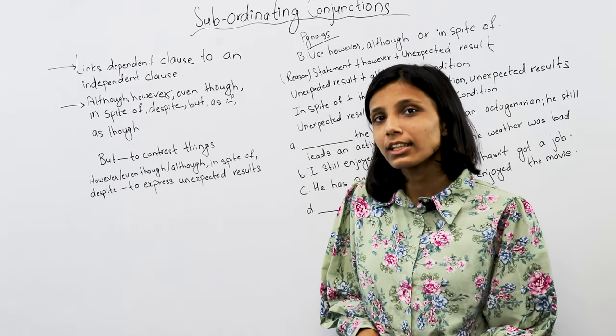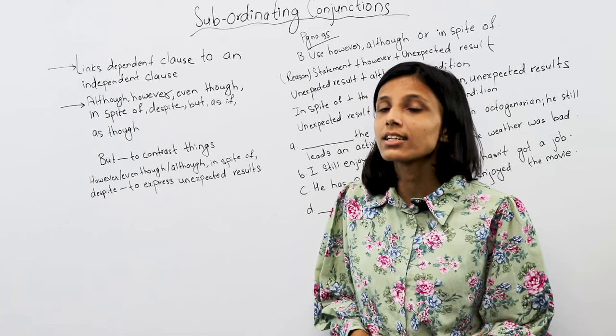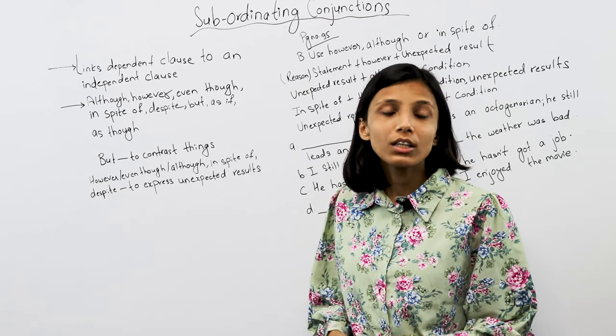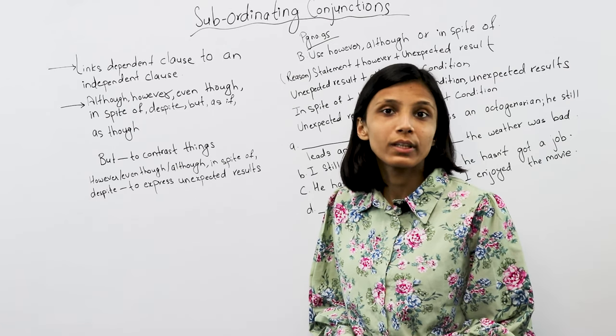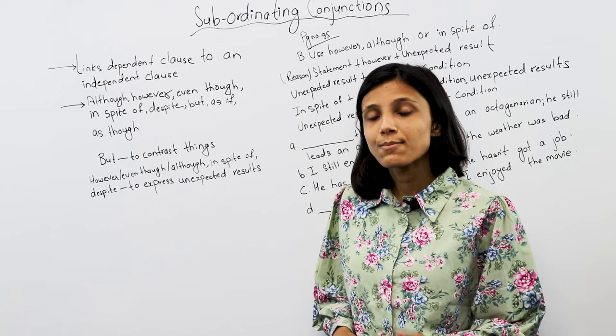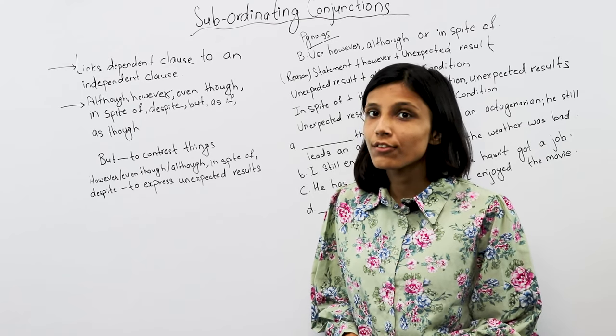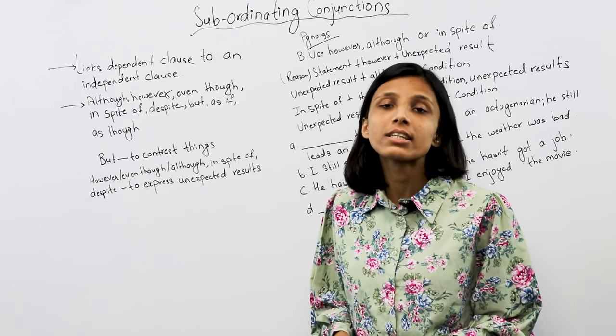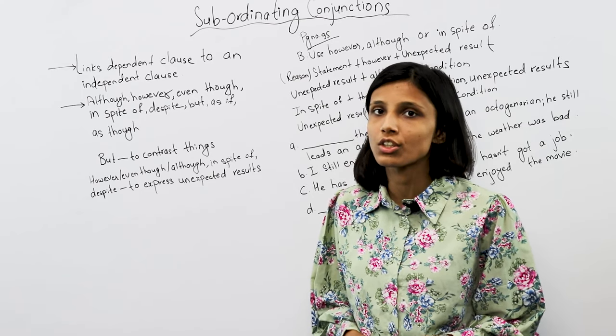Click on the link and you will know about this. The subordinating conjunctions we will cover include: although, however, in spite of, but, despite, as if, and as though.